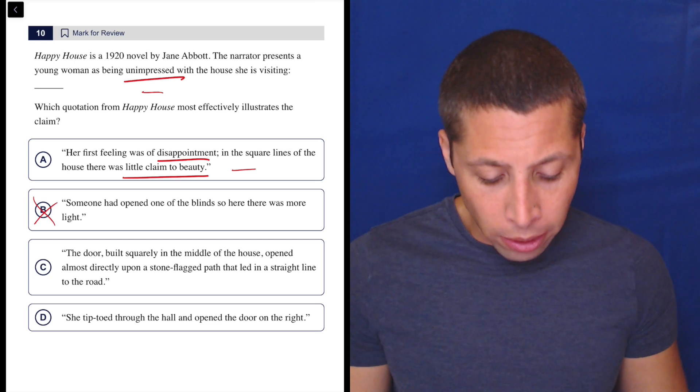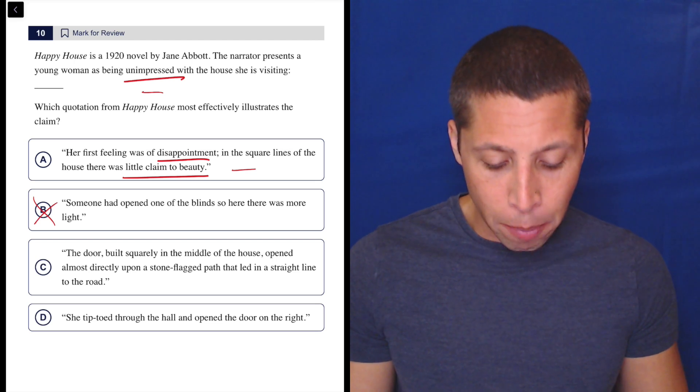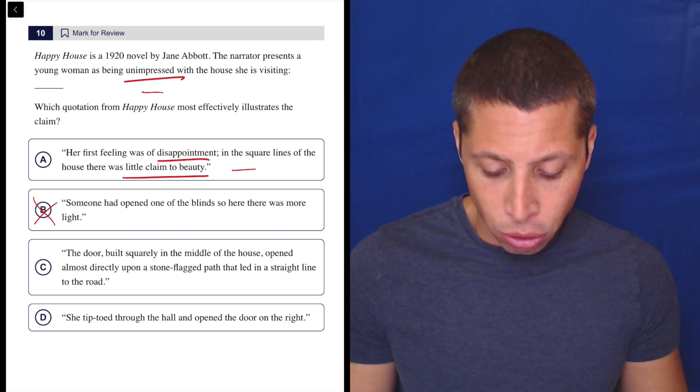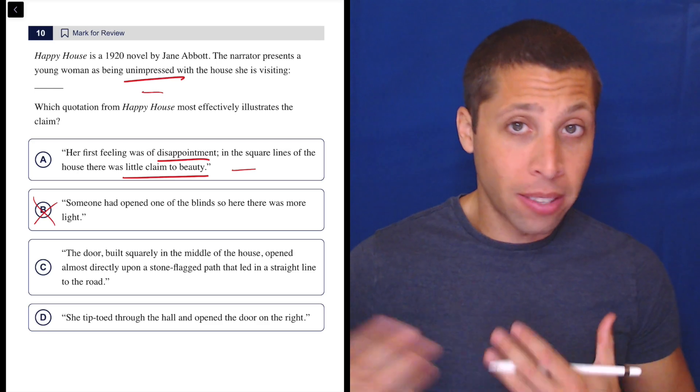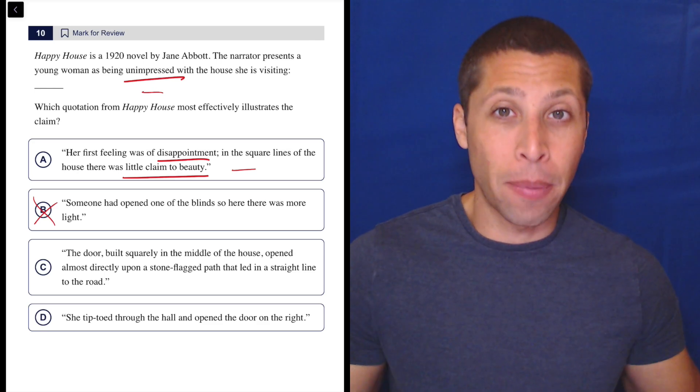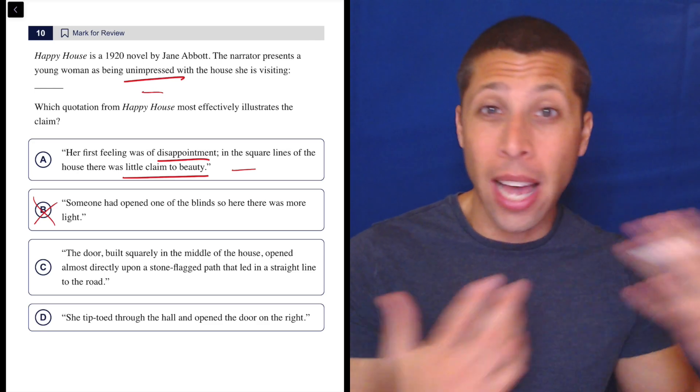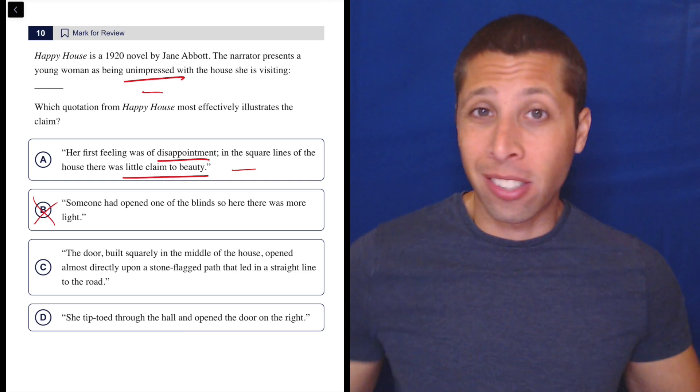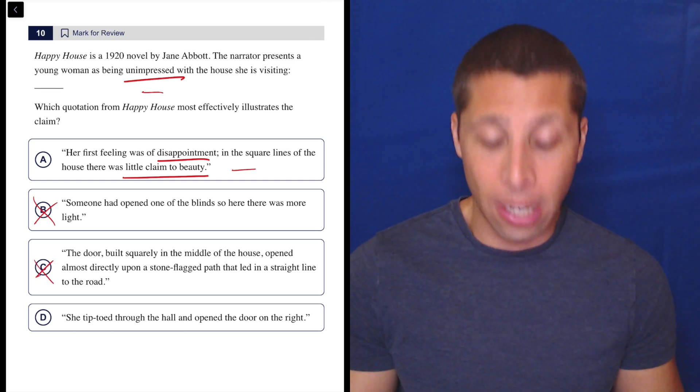Option C: The door built squarely in the middle of the house opened almost directly upon a stone-flagged path that led in a straight line to the road. Again, that's a nice description of the house, but is that something that's good or bad? Is she impressed by that, unimpressed by it? It just is a statement of fact here. It's not any sort of connotation.